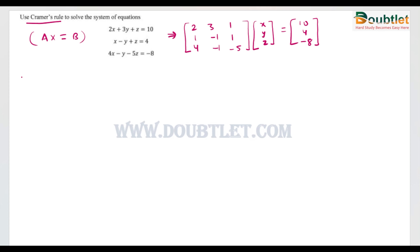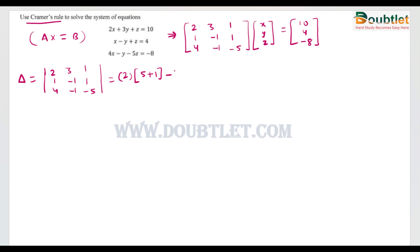By using Cramer's rule, we will find four types of determinants. First of all, we will find the determinant of matrix A, which is [[2, 3, 1], [1, -1, 1], [4, -1, -5]].